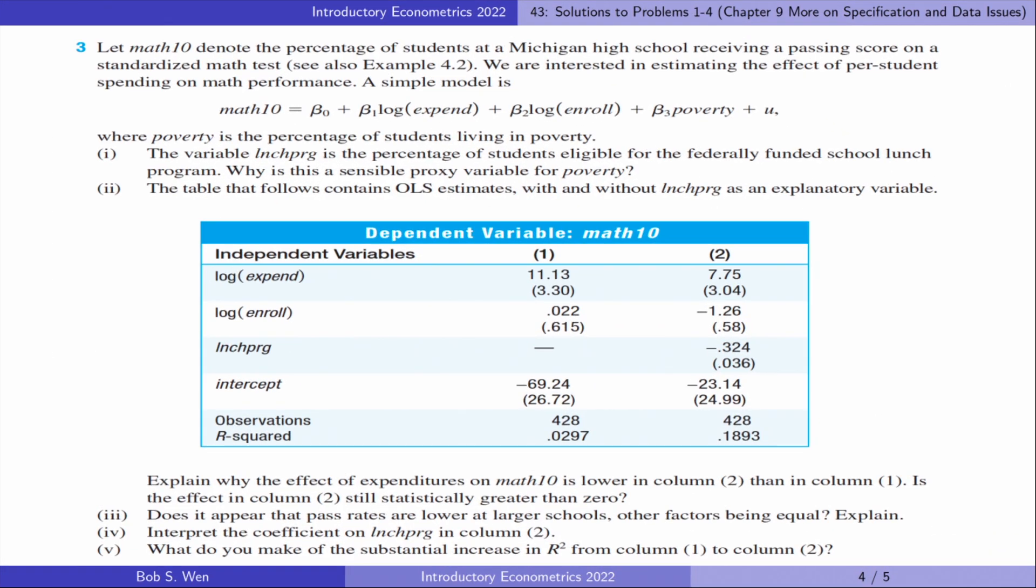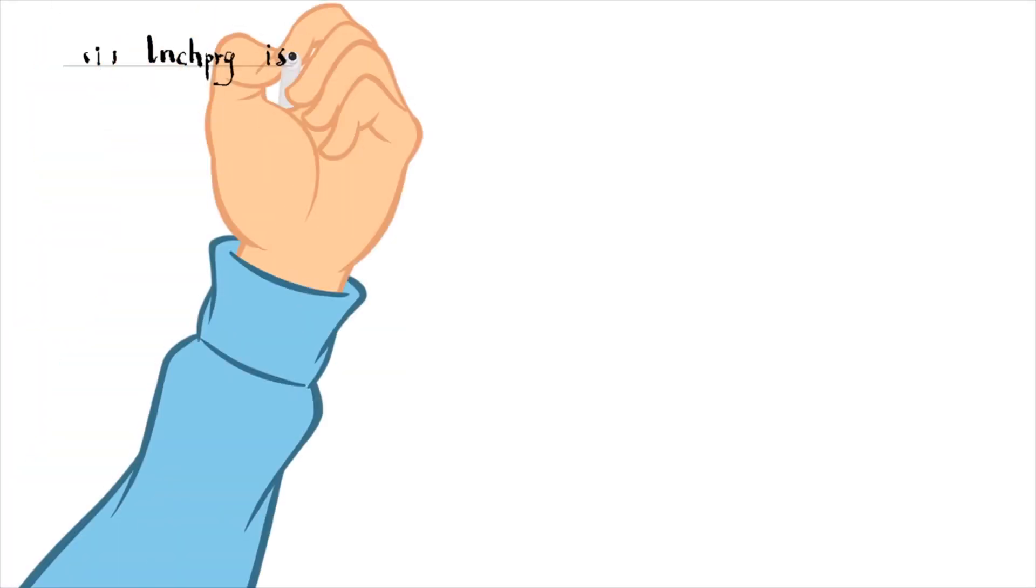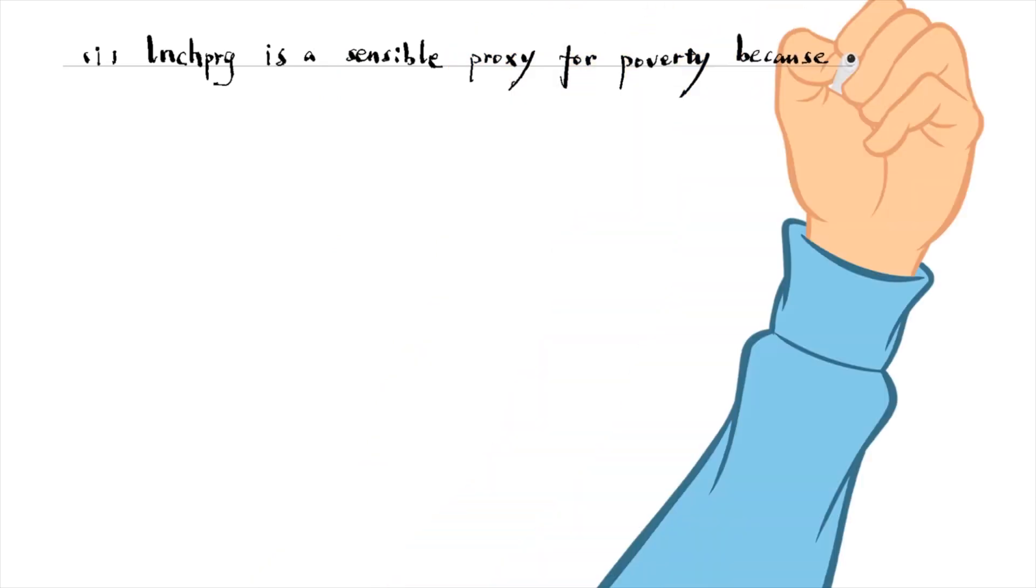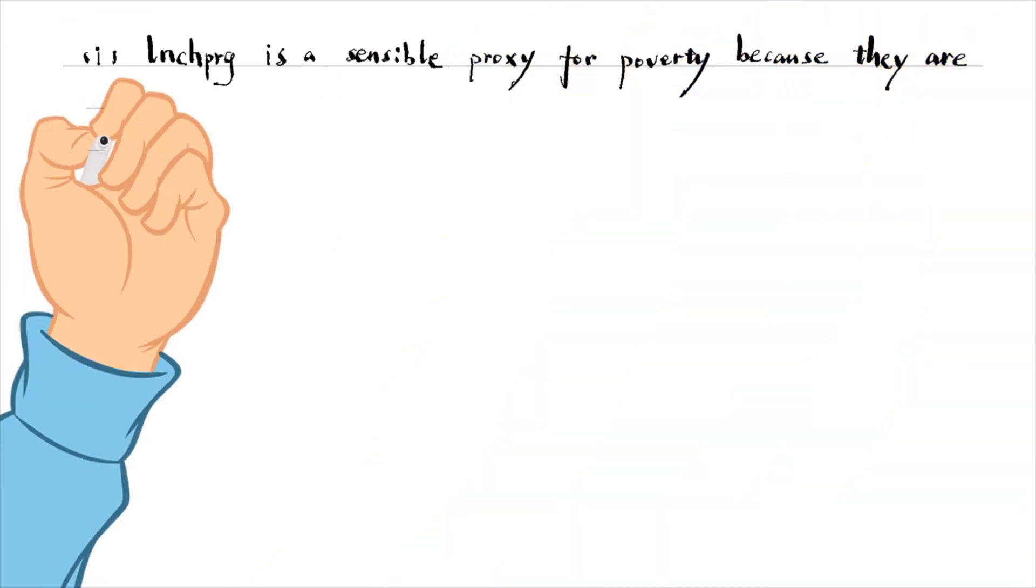Let's find answers to problem 3. For part 1, the percentage of students eligible for the school lunch program is a sensible proxy for poverty because they are highly correlated.